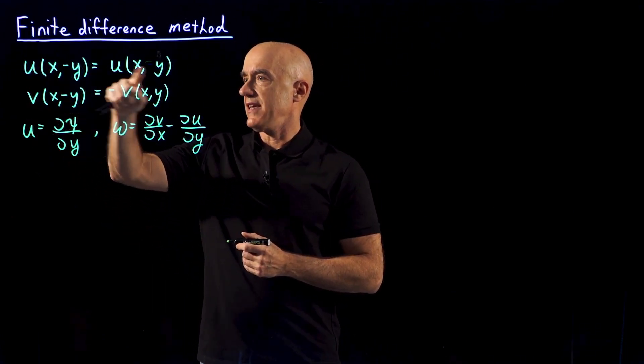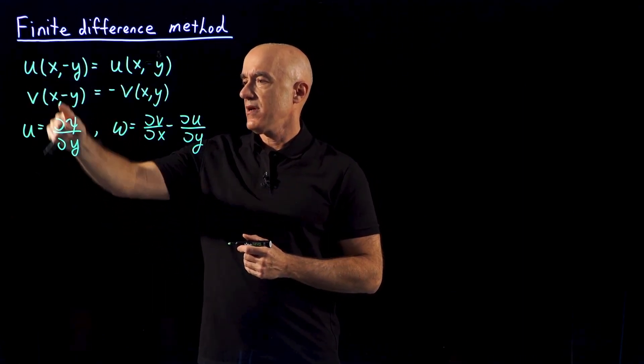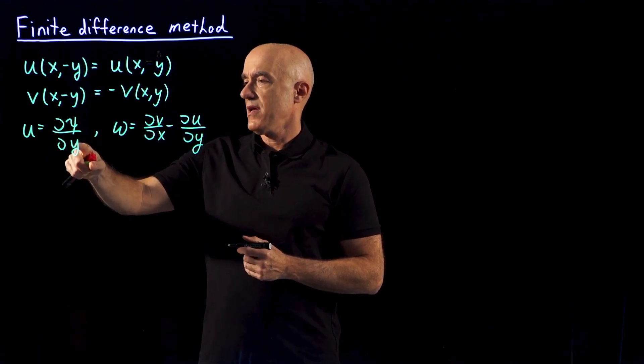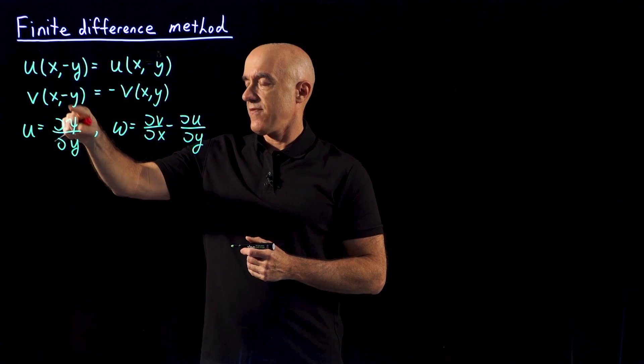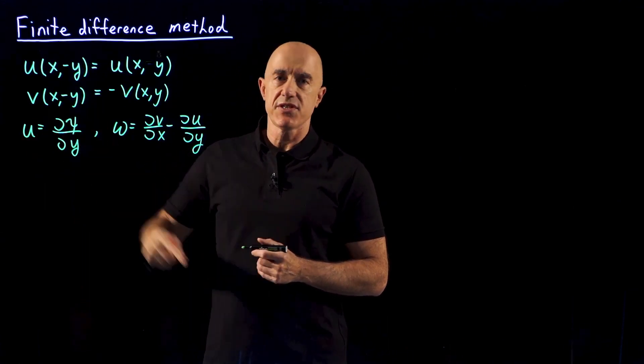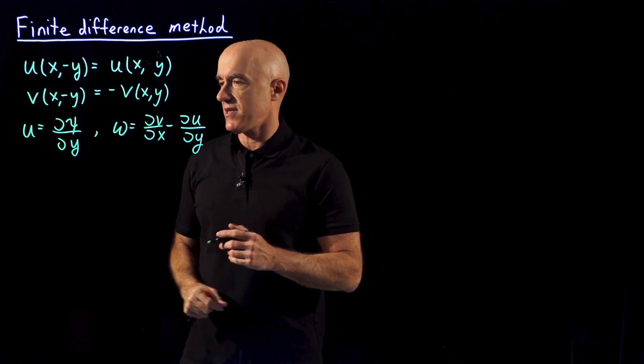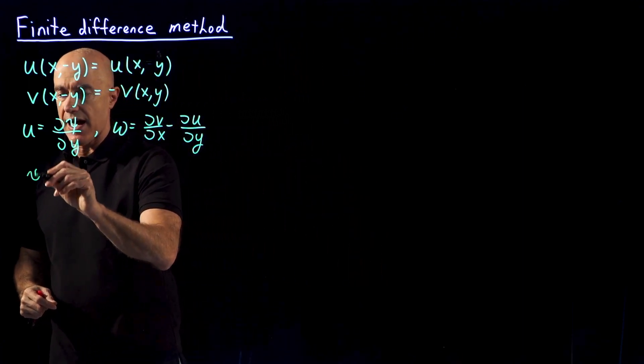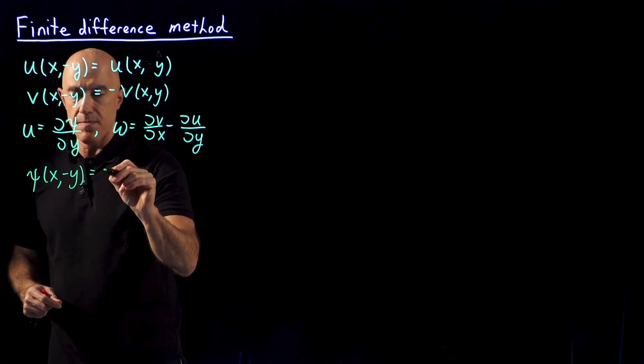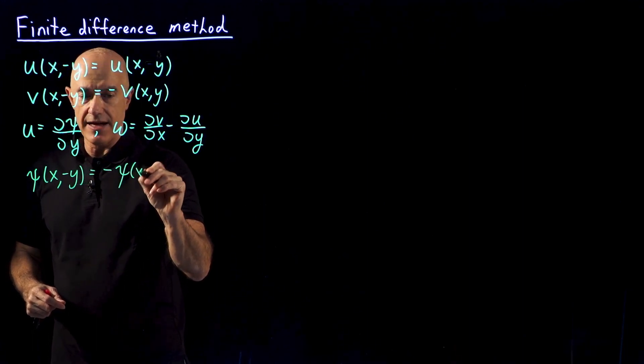So if u is even in the variable, the derivative of ψ in the variable, if the derivative is even because u is even, then the function ψ in the variable is odd. So we have ψ(x,-y) equals -ψ(x,y).